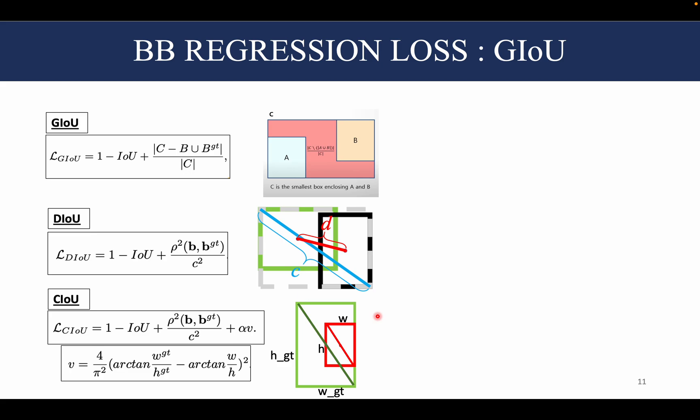Thus, to improve upon the IoU loss, various variants have been proposed. The first one being GIoU, or generalized IoU. The GIoU basically takes the previous IoU loss and adds another term. This term corresponds to this area. So therefore, it's trying to minimize this area in order to bring the predicted box closer to the ground truth box.